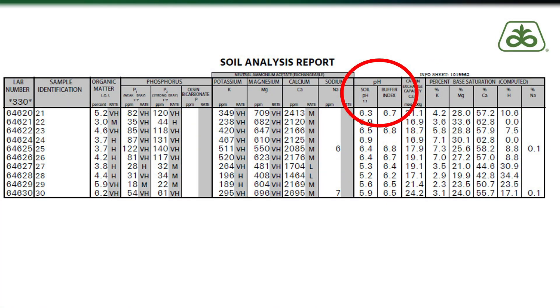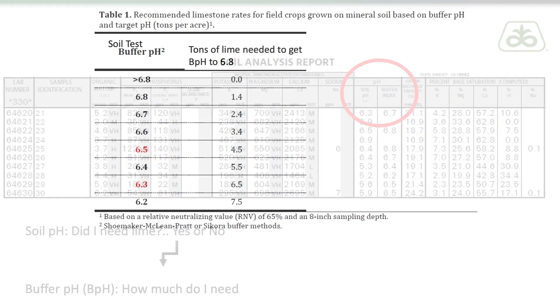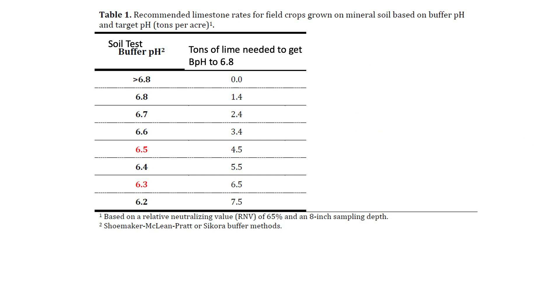How do we determine if we need lime? Pretty simple — soil pH is basically a yes-or-no question. If my soil pH readings are 6.3 or less, or especially 6.0 or less, we know that we need lime. If it's higher than that, we don't. If you answer yes, then go to the buffer pH column and use the chart — an example from University Extension shows how many tons per acre of lime to apply based on your buffer pH. We try to get buffer pH up to about 6.8.